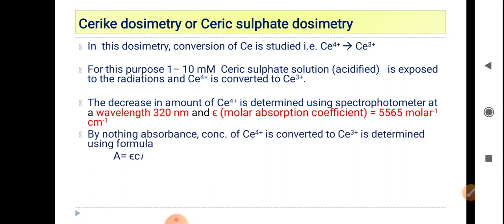By noting the absorbance, the concentration of Ce⁴⁺ converted into Ce³⁺ is determined using the Beer-Lambert law formula as previously discussed. A straight line plot of absorbance versus concentration is obtained. This concludes the discussion on Ceric dosimetry and chemical dosimetry.